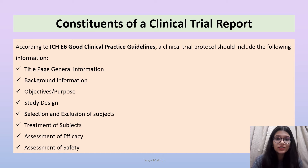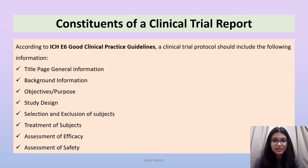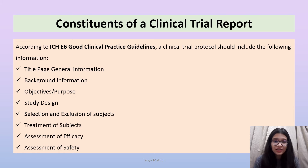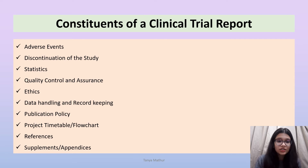This brings us to the constituents of a clinical trial protocol. According to the ICH E6 Good Clinical Practice guidelines, a clinical trial protocol should include the following: a title page for general information, background information, objectives or purpose of the clinical trial, study design, selection and exclusion of subjects, treatment of subjects, assessment of efficacy, assessment of safety, adverse events, discontinuation of the study, statistics, QC and QA, ethics, data handling and record keeping, publication policy, project timetable or flowchart, references, and supplements or appendices.